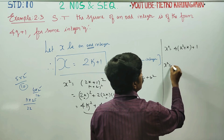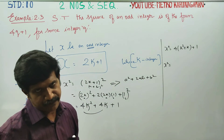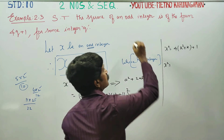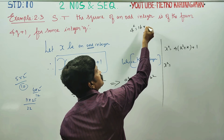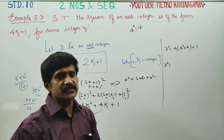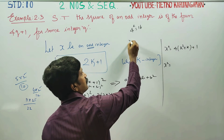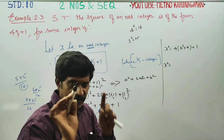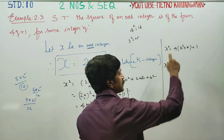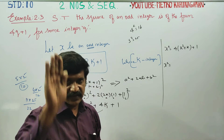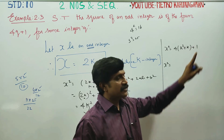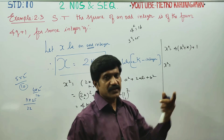Now, k is an integer. Squaring an integer gives an integer — for example, 4 squared is 16, which is an integer; 5 squared is 25, which is also an integer. Adding two integers gives an integer. So k squared plus k is also an integer.